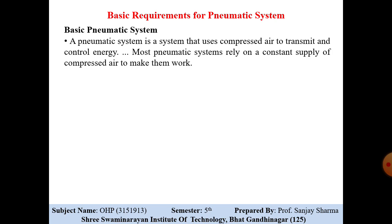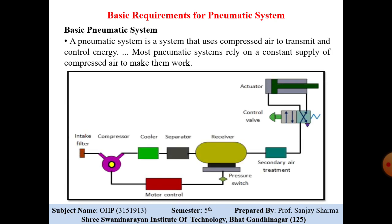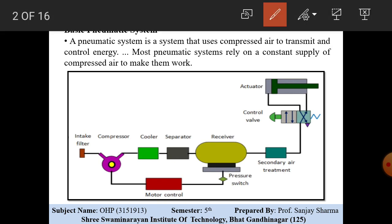A compressor is used to store compressed air, and that air is supplied through a control valve to the actuator to obtain output work. This is the diagram — you can see the air intake filter, the compressor, the intercooler and separator, the receiver, the secondary treatment unit, the control valve, and the actuator.